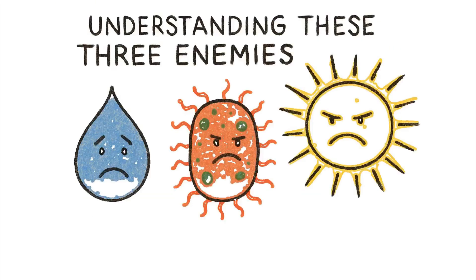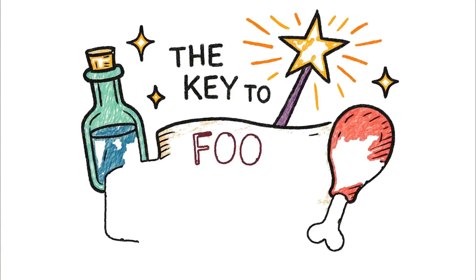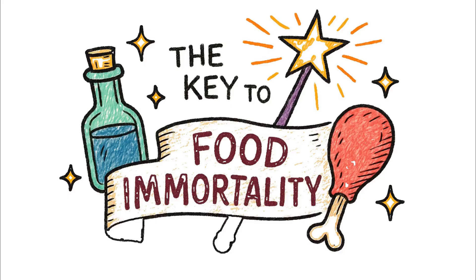Understanding these three enemies is the first step. Defeating them is the key to what seems like magic, but is pure science: food immortality.